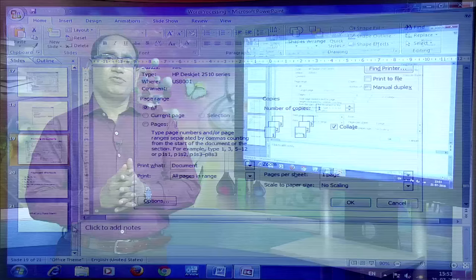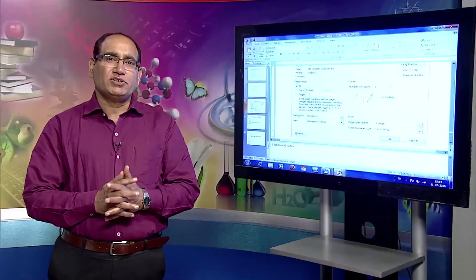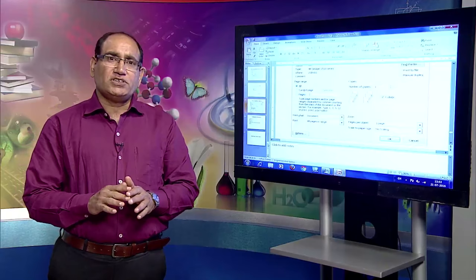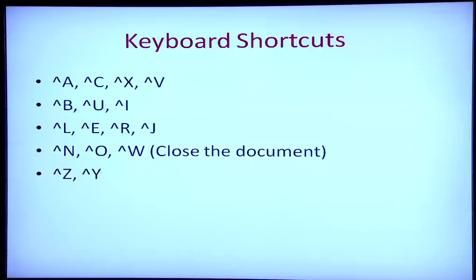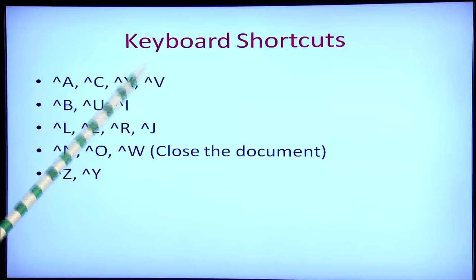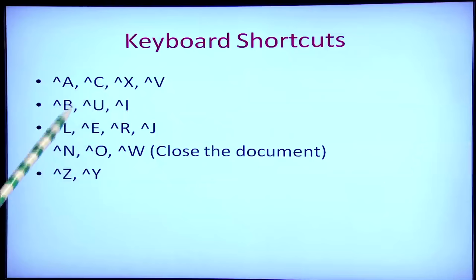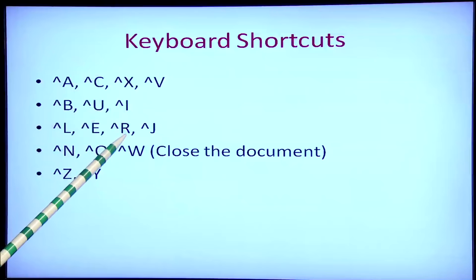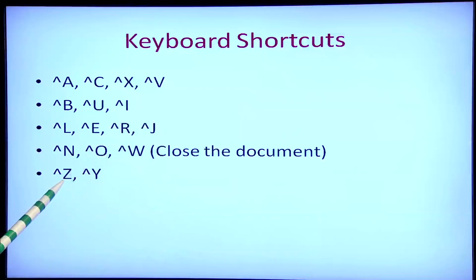There are also many keyboard shortcuts. Ctrl+A selects the entire document; Ctrl+C copies; Ctrl+X cuts; Ctrl+V pastes; Ctrl+B, Ctrl+U, Ctrl+I make text bold, underlined, or italic; shortcuts are also available for left alignment, center alignment, right alignment, and justify. Ctrl+N creates a new document; Ctrl+O opens a document; Ctrl+W closes a document; Ctrl+Z is undo; and Ctrl+Y is redo. These shortcuts make working with documents easier.